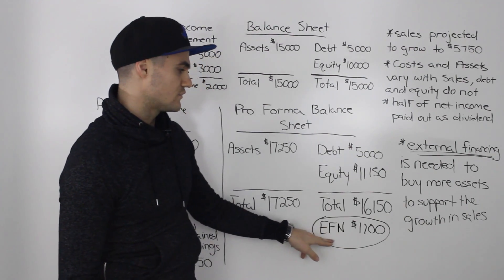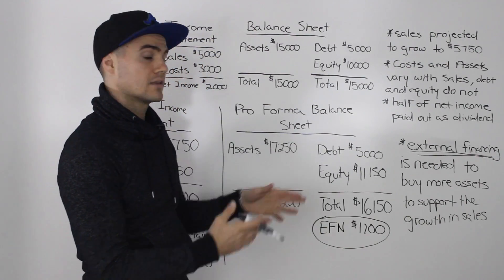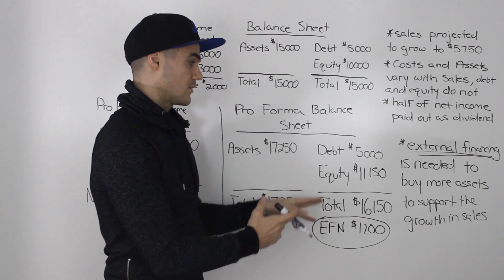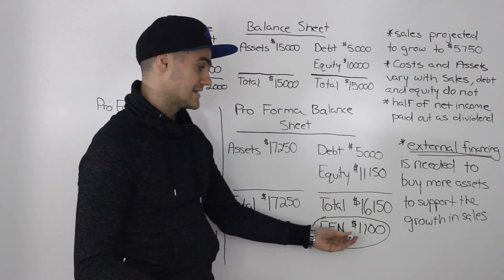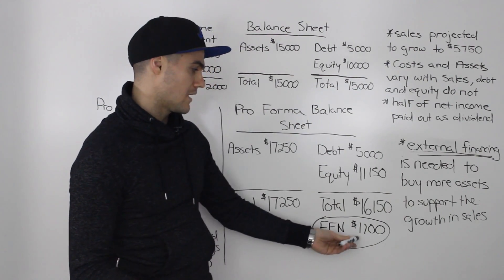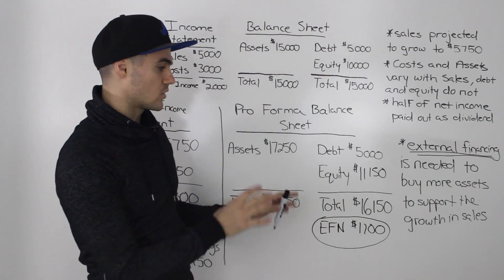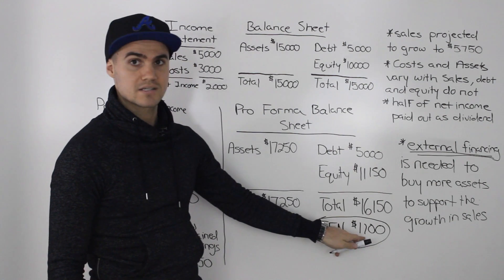So we need to get that external financing. Now, whether it's going to be that we take on more debt, whether we take on more equity, we don't know. All we know is that we need to get that money from somewhere. And the amount that we need to support this growth in sales is $1,100.